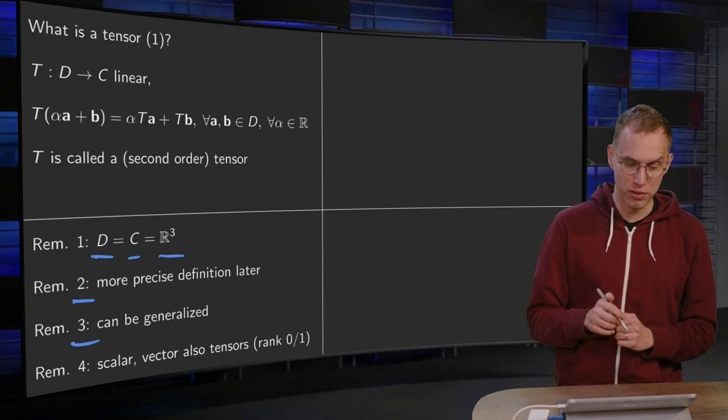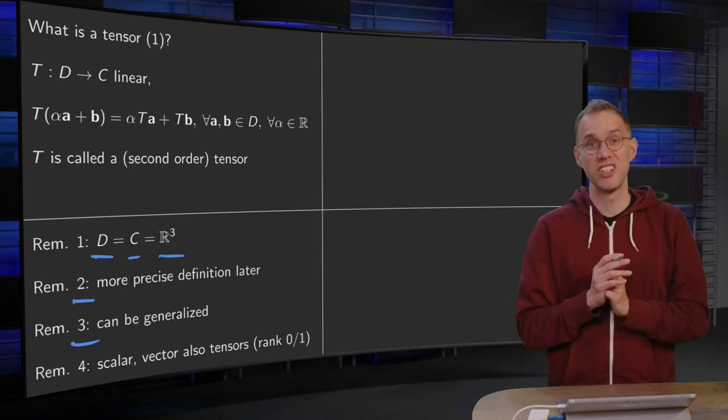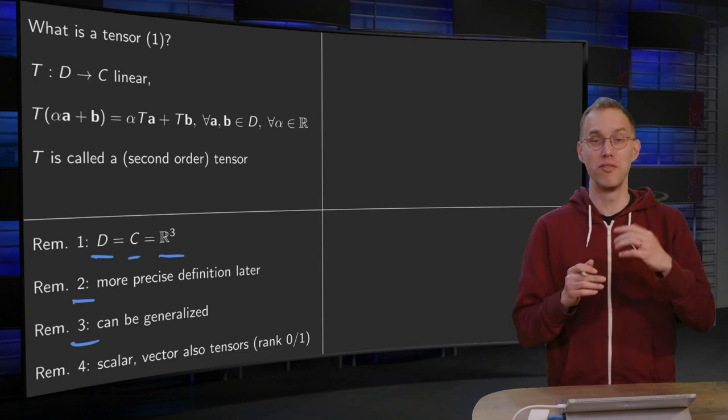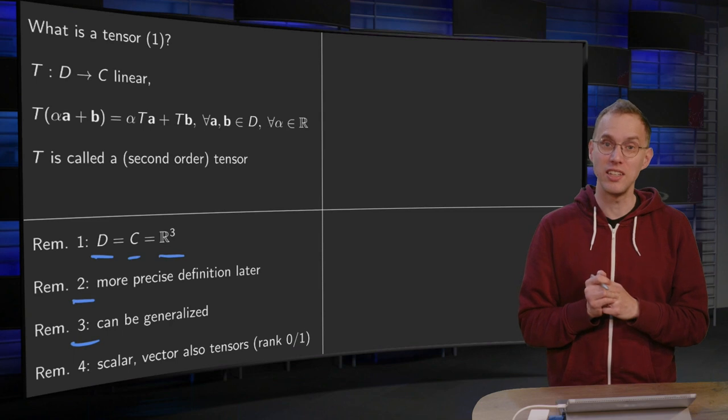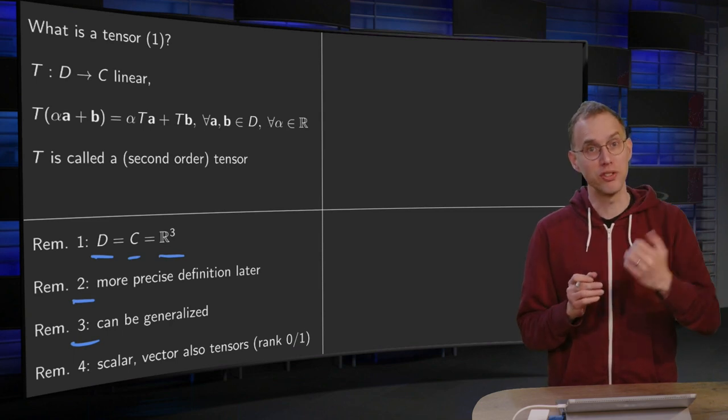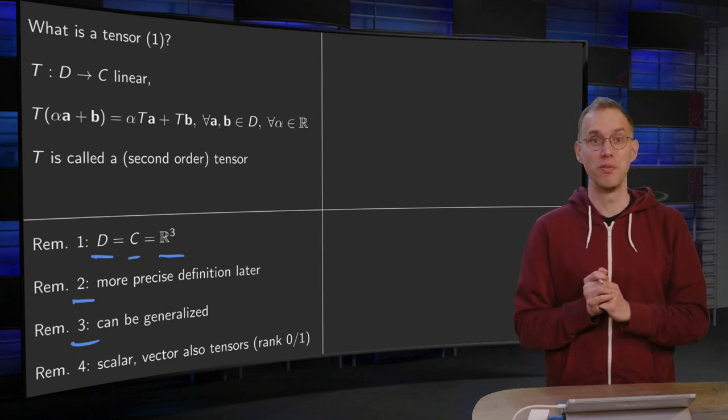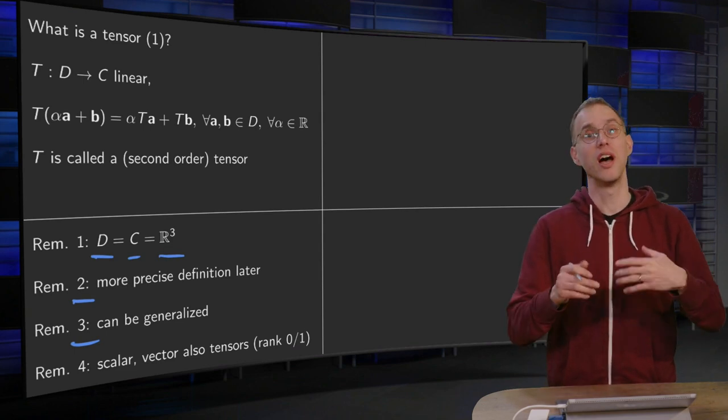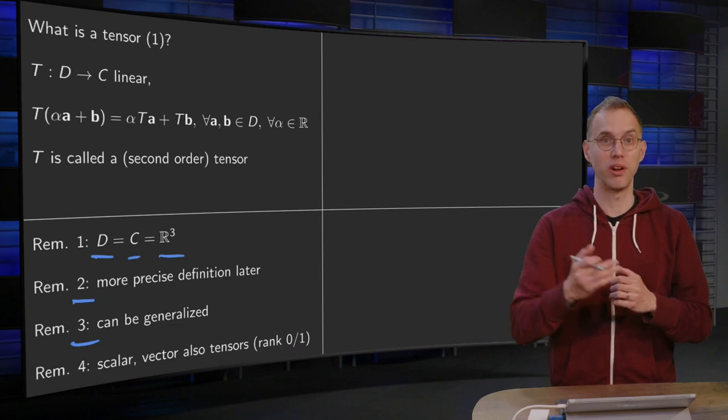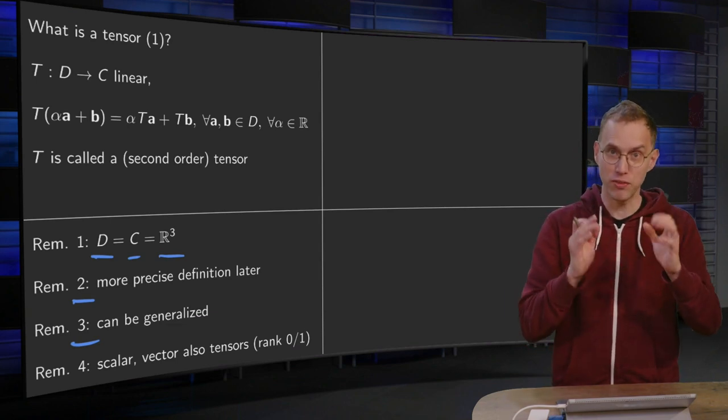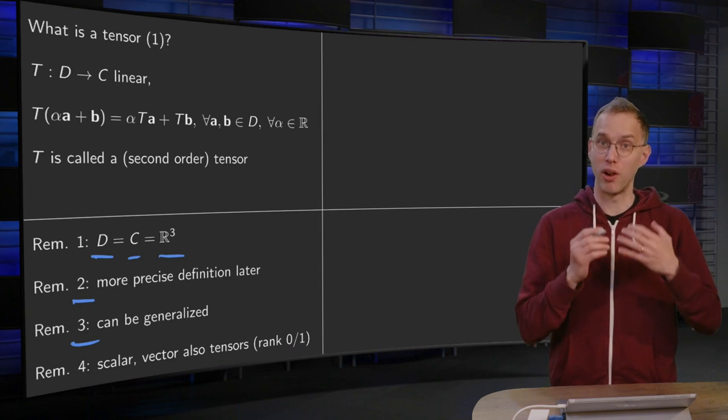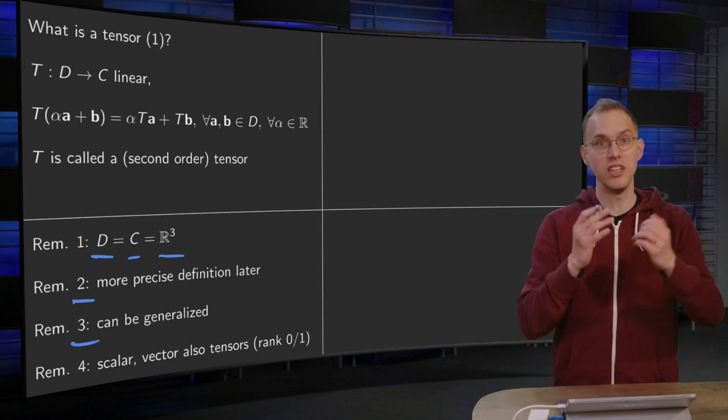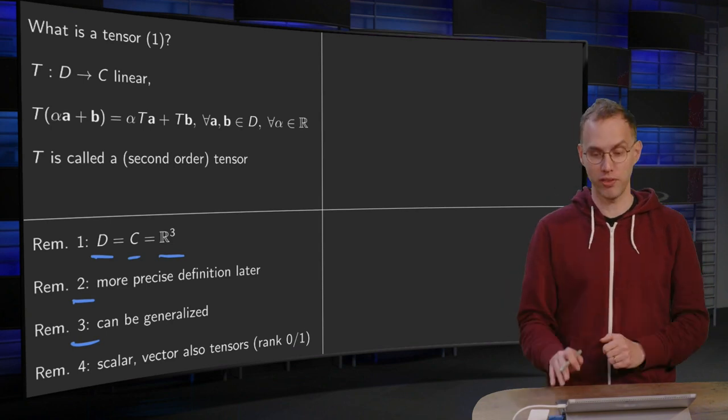And fourth remark, we are talking now about second order tensors. That already gives the impression that there will also be first and third order tensors. And indeed, as we will see later, a scalar will be a zero-order tensor and a vector will be a first-order tensor. And we will also encounter third-order tensors and so on. That's for later. For now, we will stick to our operational and relatively easy definition. T is just a linear mapping from R³ to R³.